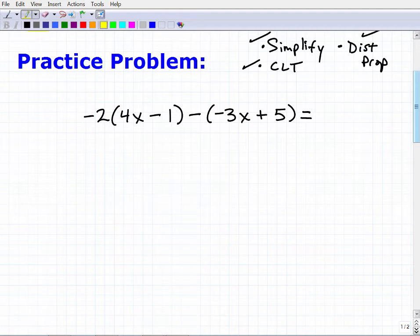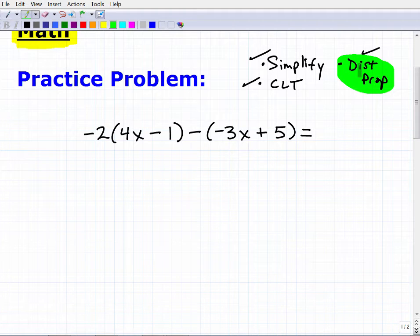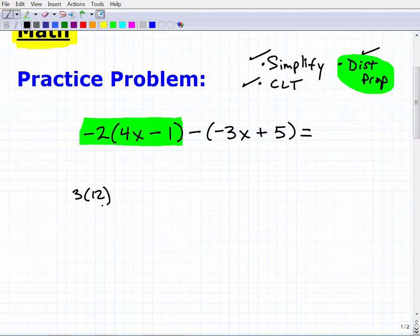All right, so the first thing we're going to do is use the distributive property. This is the first thing we need to do in this particular expression. So the distributive property is a property that essentially allows us to multiply in a different way. Let me show you a quick example. I'm going to do this, but let me show you a quick example. So let's say I wanted to take 3 and multiply it by 12. So 3 times 12. Hopefully, most of you out there are like, oh, that's 36. 3 times 12, 36. Perfect. So I can write it this way, right? 3 times 12 or 3 times 12. So we all agree that the answer is 36. Perfect.